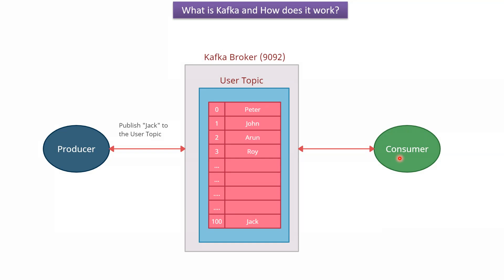In the case of Kafka, the consumer polls the username from the user topic. Suppose this producer sends millions of usernames to the user topic — the user topic will keep on growing and will become larger and larger.